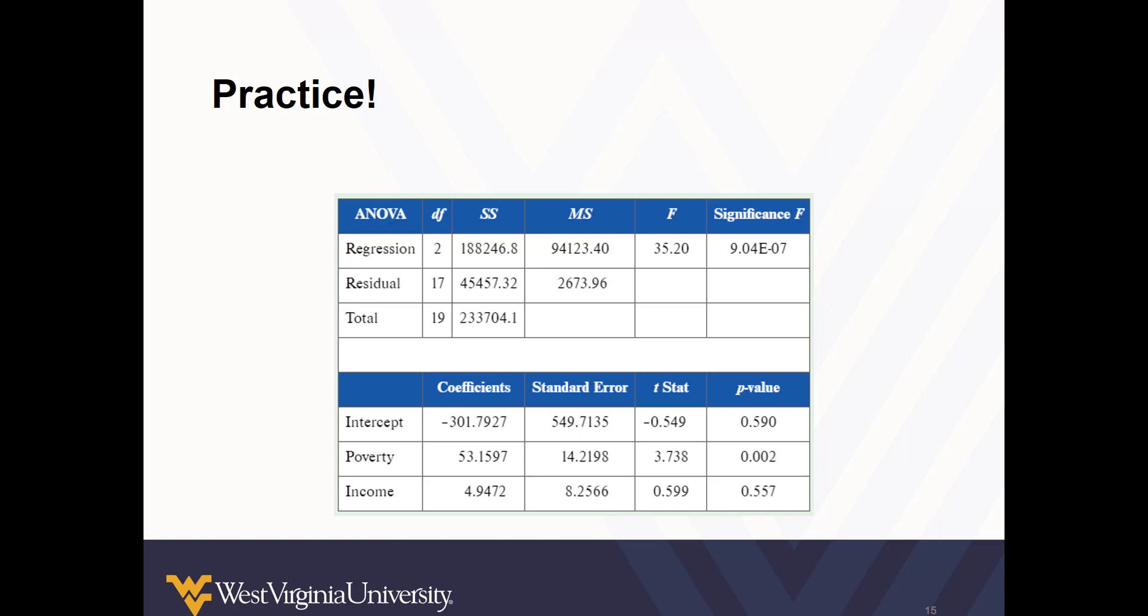Now let's practice. For a sample of 20 New England cities, a sociologist studies the crime rate in each city, crimes per 100,000 residents, as a function of its poverty rate and its median income in thousands. Here is a summary of the results. At the 5% significance level, are the poverty rate and income jointly significant in explaining the crime rate? And at the 5% significance level, is poverty significant? Is income significant? Take a few moments, take a look, and think about it. And see if you have mastered how we can go about evaluating the results of our regression models using tests of significance.